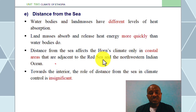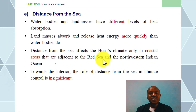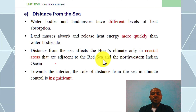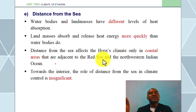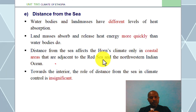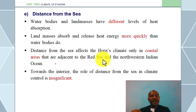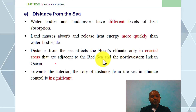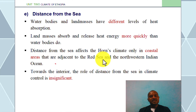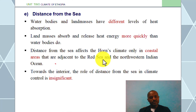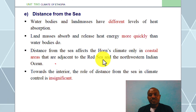Distance from the sea has an impact. Land masses and water bodies have different levels of heat absorption. Water is very important — it is a critical part of heat retention. Land releases heat energy more quickly than water.